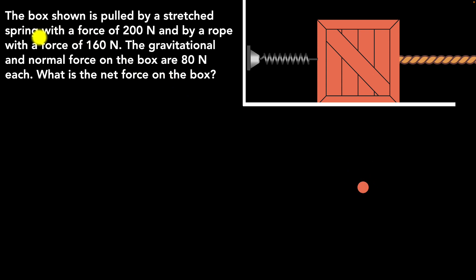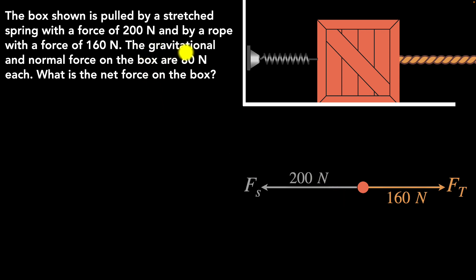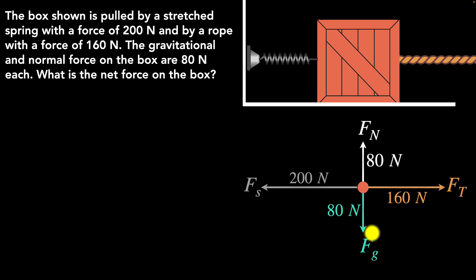So we draw a spring force of 200 newtons pulling to the left, originating from the dot. Then we have the rope pulling with 160 newtons to the right — that's the tension force. The length of each arrow must be proportional to the magnitude of the force. Then there's a gravitational force of 80 newtons acting downwards, and a normal force of 80 newtons pushing upwards. These are all the forces acting on the body, and this is our free body diagram. Notice we only draw forces acting on the object of interest — not forces on the floor, rope, or spring.